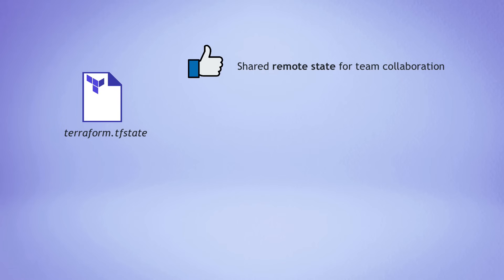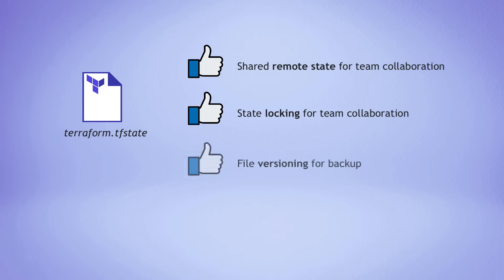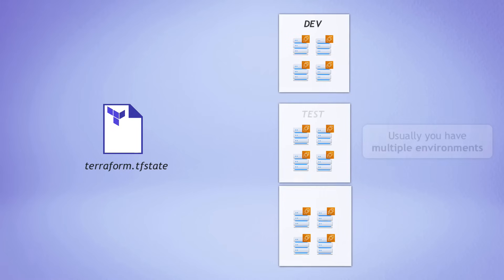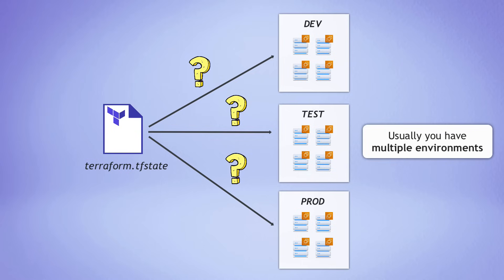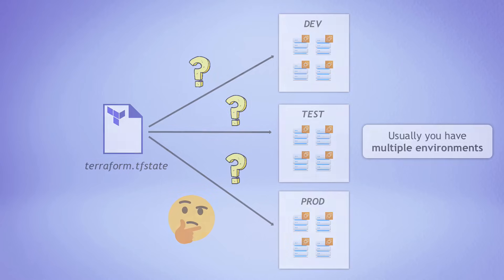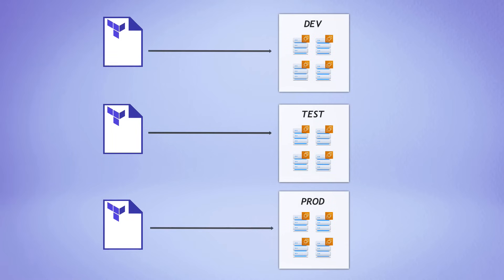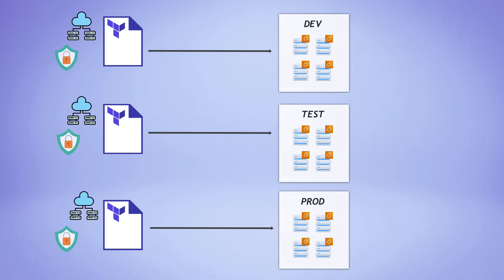So now you have your state file in a shared remote location with locking enabled and file versioning for backup — one state file for your infrastructure. But usually you will have multiple environments, like development, testing, and production. So which environment does this state file belong to? The next best practice is to use one dedicated state file per environment, and each state file will have its own storage backend with locking and versioning configured.